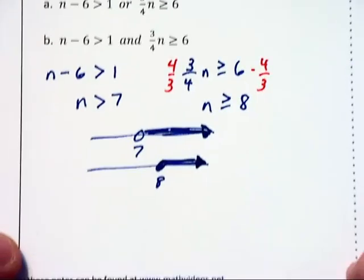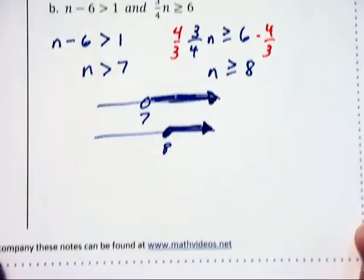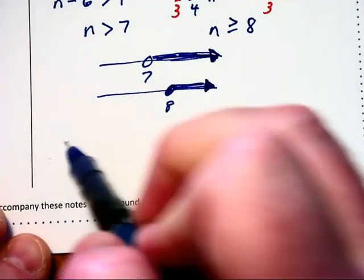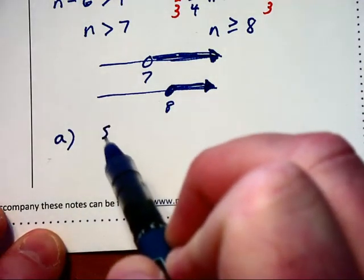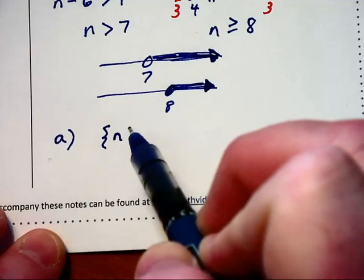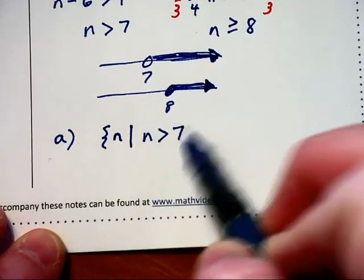And in part A, we are asked to find one or the other, which refers to their union. And so the answer to A will be the set of all n values such that n is greater than 7.